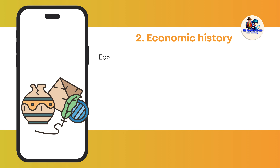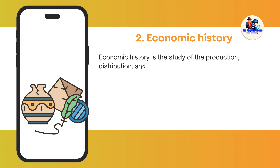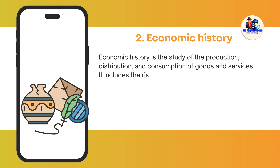Economic history is the study of the production, distribution, and consumption of goods and services. It includes the rise of trade, commerce, and industry, the impact of technology and innovation, and the role of markets and regulations in shaping economic systems.